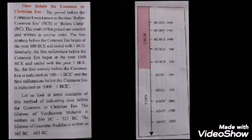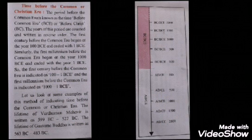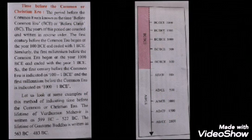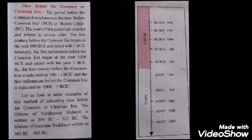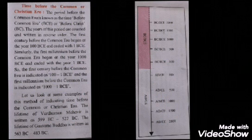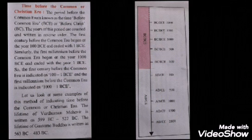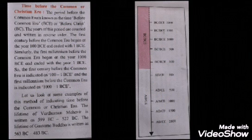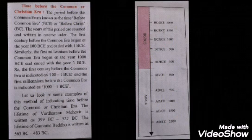BCE stands for Before Common Era, or Before Christ. The years of this period are counted and written in reverse order. The first century before the Common Era began at 100 BCE and ended with 1 BCE. Similarly, the first millennium before the Common Era began at 1000 BCE and ended with 1 BCE. So the first century BCE is indicated as 100 to 1 BCE, and the first millennium BCE as 1000 to 1 BCE.